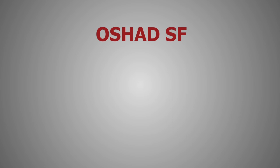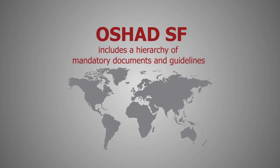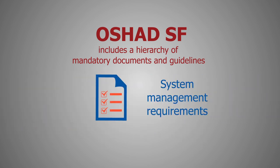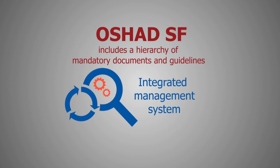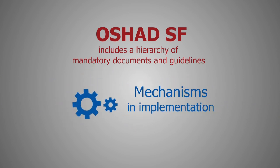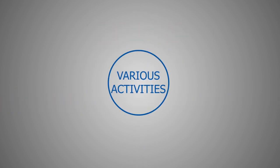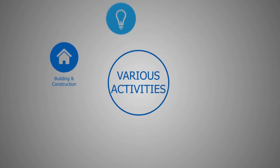OSHAD SF includes a hierarchy of mandatory documents and guidelines that was developed based on best international practices. It includes system management requirements for developing an integrated management system and mechanisms to be followed in implementation, in addition to technical requirements related to various activities such as building and construction,